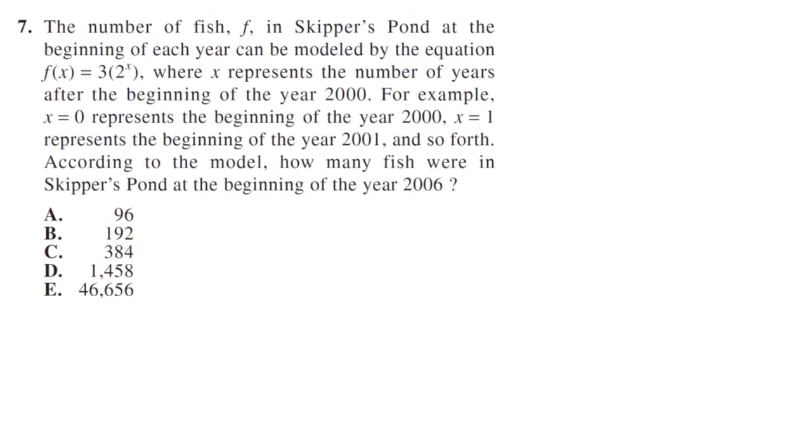The number of fish in Skipper's Pond at the beginning of each year can be modeled by this equation, where x represents the number of years after the beginning of 2000. For example, x equals zero represents the beginning of the year 2000. It's nice to tell you that. Sometimes if it's a harder question, they're not going to give you that. Anyway, x equals one represents 2001 and so forth. How many fish were in the pond in 2006?